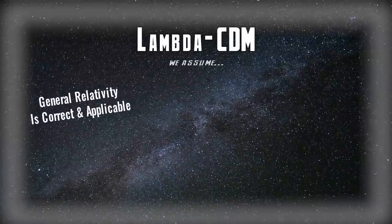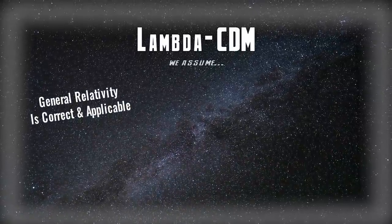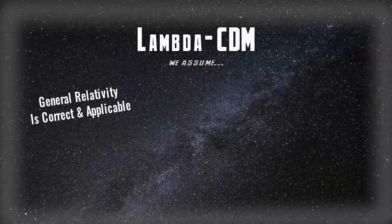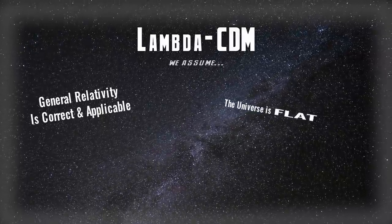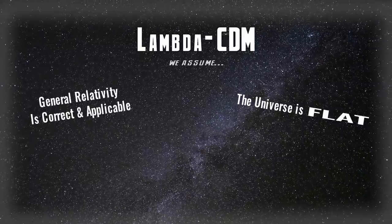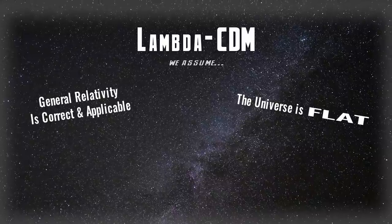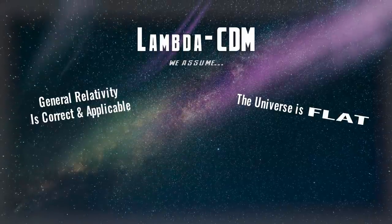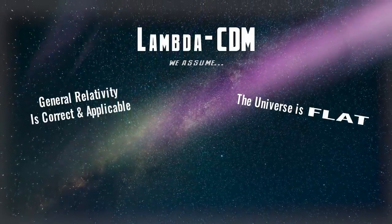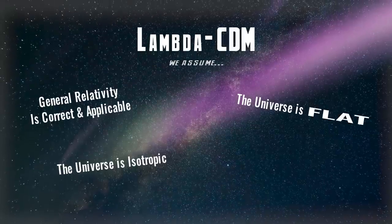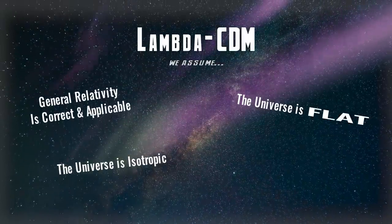We're going to assume that general relativity is correct and applicable to the whole entire universe — that could be wrong, but so far it looks correct. We're going to assume the universe is flat — again, it could be wrong, but all observations suggest it is. We're trying to make a model with as few assumptions and as few free parameters as possible: the smallest set of statements needed to describe the whole universe. We also assume the universe is isotropic and homogeneous — pretty much the same at large scales no matter where you look or go.